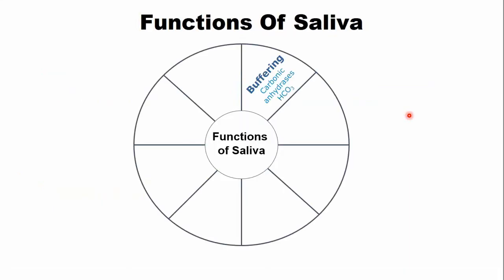Saliva has a buffering action — if the pH of the oral cavity becomes acidic, the carbonic anhydrases and bicarbonates present in saliva try to bring the pH back towards neutral. Saliva also helps in digestion through lipase, which aids initial digestion of fat, and amylase, which aids digestion of starch. Mucins help in bolus formation and swallowing of food. Saliva helps in the remineralization of microscopic caries lesions because it is rich in calcium, fluoride, and phosphates. Additionally, saliva contains proteins such as statherin, which is a calcium-binding protein.